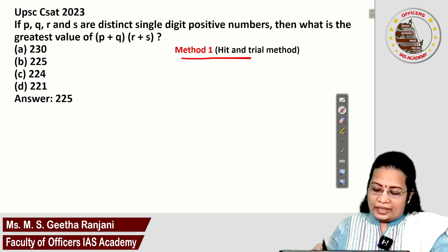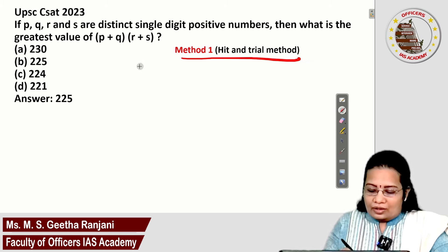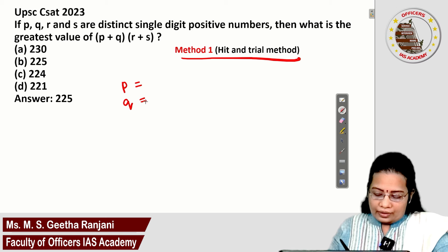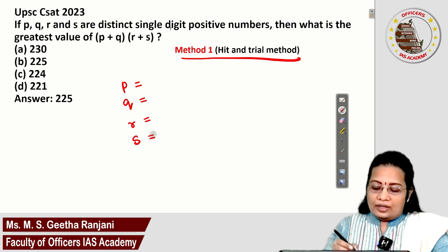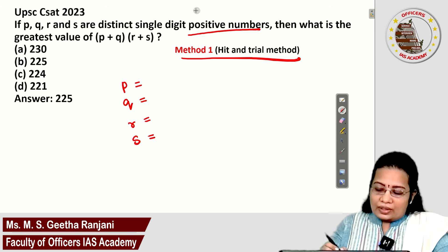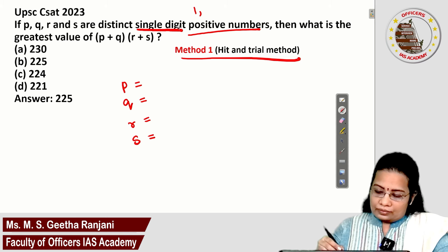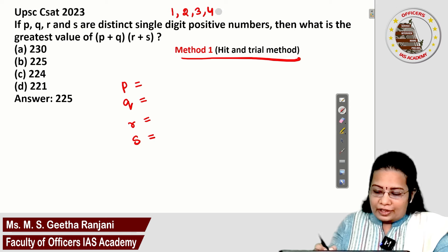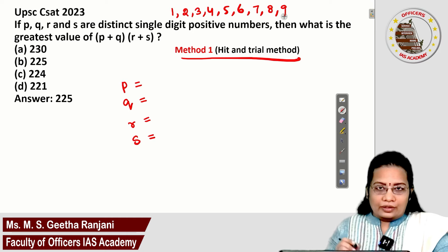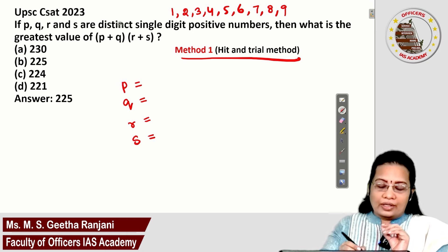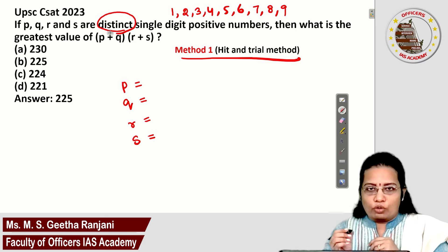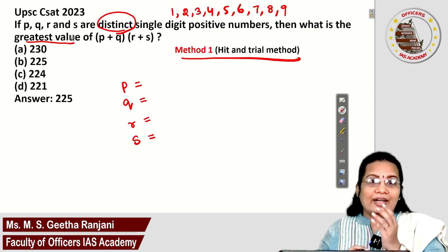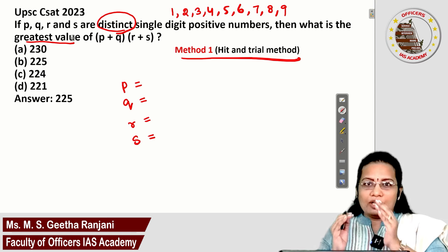Under Method 1, the hit and trial method, we assign values to P, Q, R, S. The given range is single digit positive numbers: 1, 2, up to 9. We want to choose values for P, Q, R, S such that they are all different — that is the meaning of distinct — and we obtain the greatest product. So we choose the 4 greatest values among the 9: 9, 8, 7, and 6.